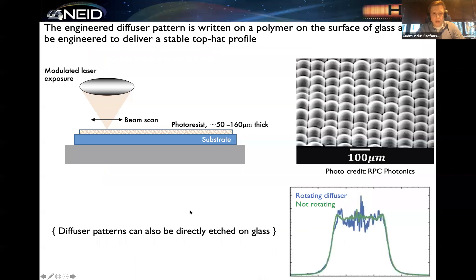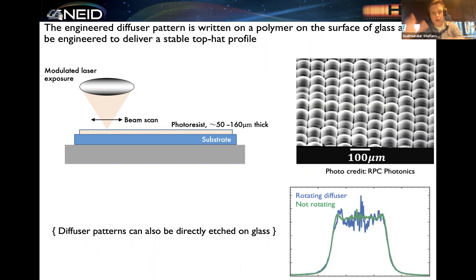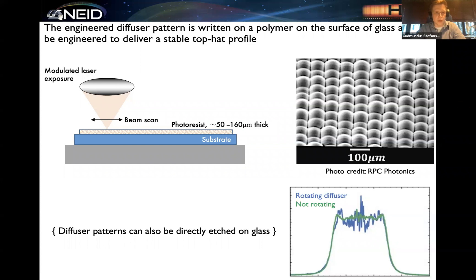How diffusers are made: essentially there is a glass substrate with a thin polymer layer on top. You use a UV laser that sits on a very precise XY stage. By modulating the intensity of the laser as you step through the XY coordinates, you can essentially write out your diffuser pattern and then etch away the differently exposed photoresist layer, and then you have your micro-lens at the end.